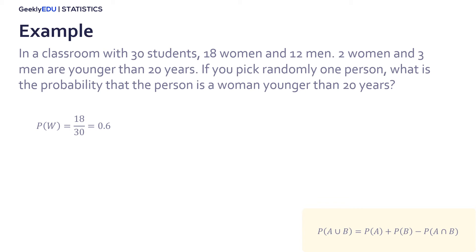Now, the probability of picking someone under 20 years is 5 in 30. In this case, we also need to count the men that are younger than 20. And finally, the simultaneous occurrence of being younger than 20 and being a woman, that is 2 in 30.